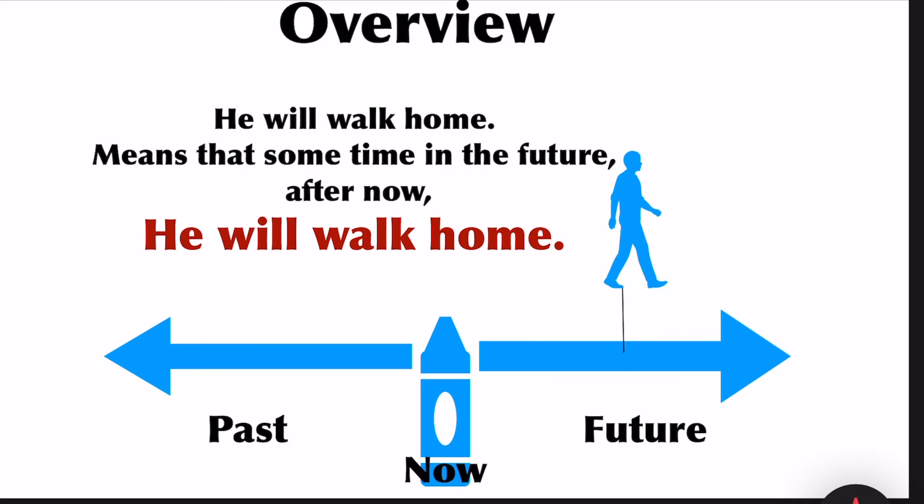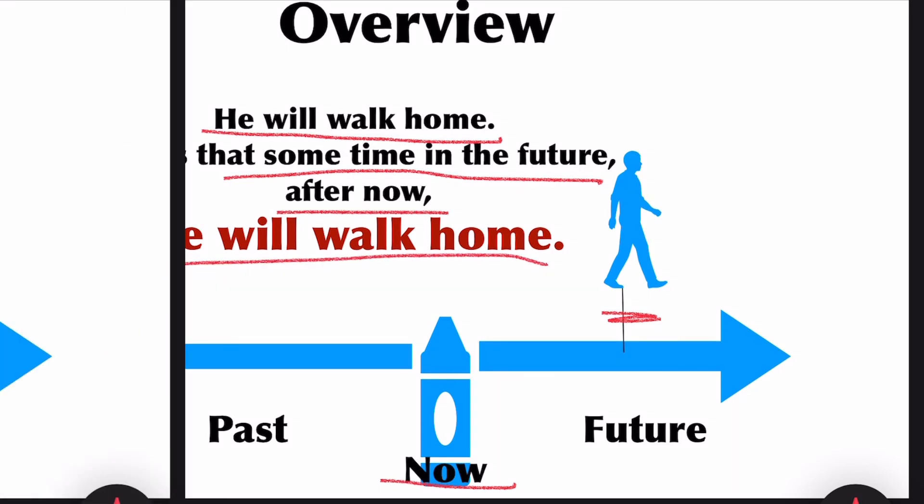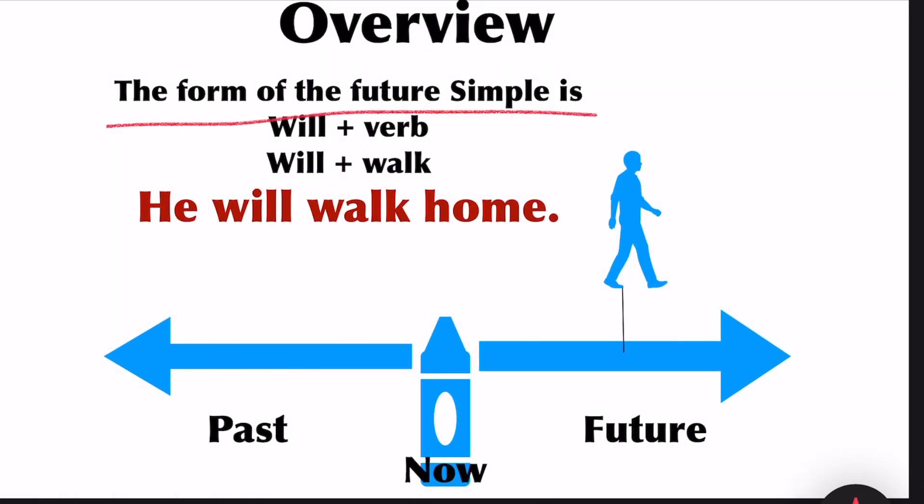Simple future: he will walk home. He will walk home means some point in the future he will walk home. The form of the future simple is will plus verb, that is will plus walk. He will walk home.